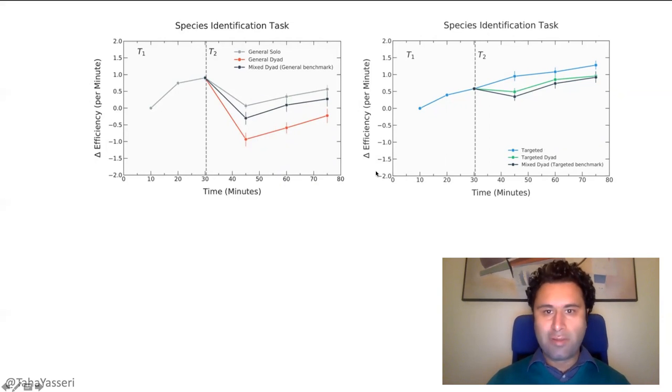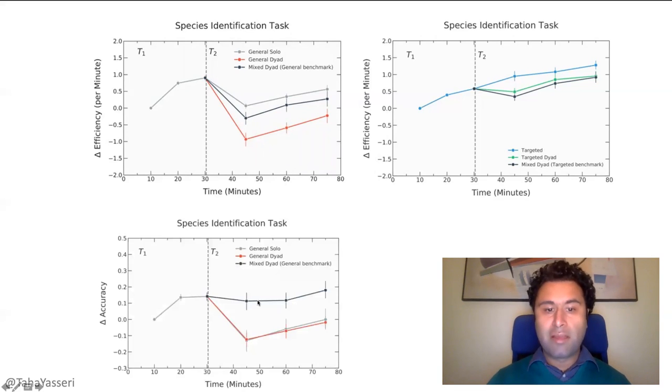When you look at the accuracy, which is just the number of correct answers regardless of time, here we see the same pattern for the expert. But in the non-expert group, we see that adding the extra expert person increases the accuracy, even though the overall efficiency has not been increased because they work at a lower rate. The additional expert slows down the non-expert.